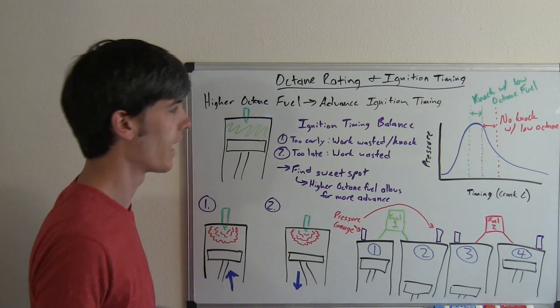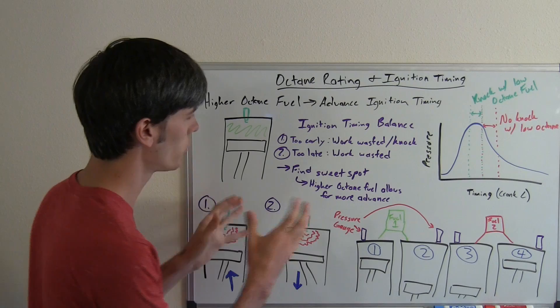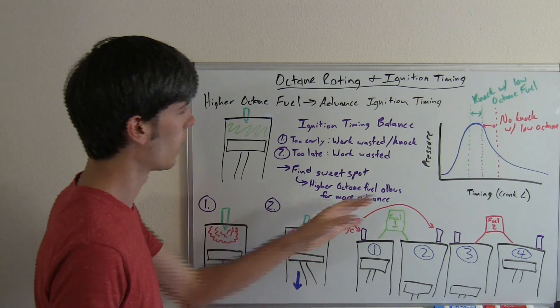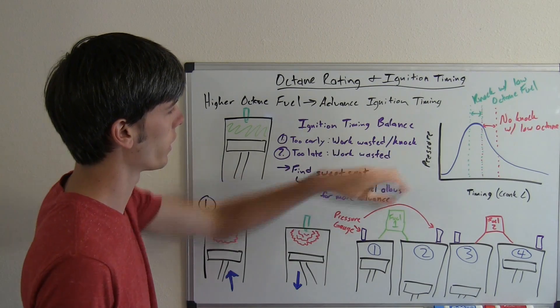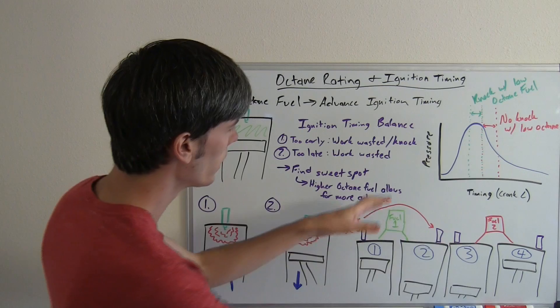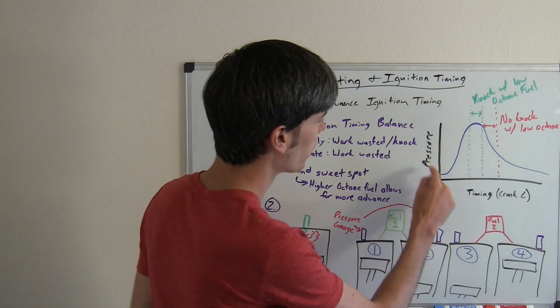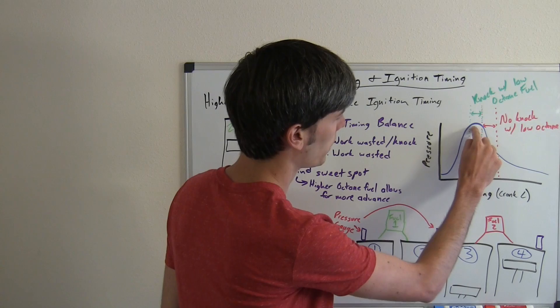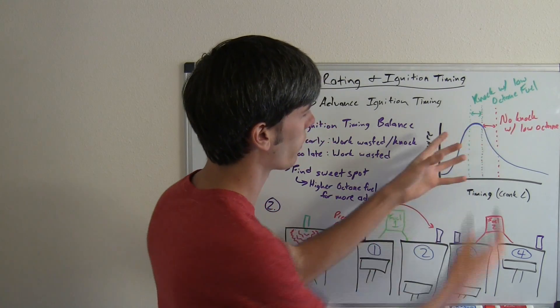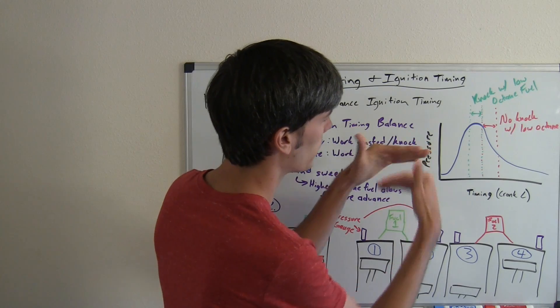So there's a sweet spot in there and your problem is if you go too early to get that higher pressure to have the piston moving down with a higher pressure, then you could run into knock if you're using low octane fuel. So here's basically a curve that I've drawn out to explain this. So here we have our pressure and your peak pressure is going to be around here and that's kind of what you want when you want to have that ignition is to create that peak pressure.